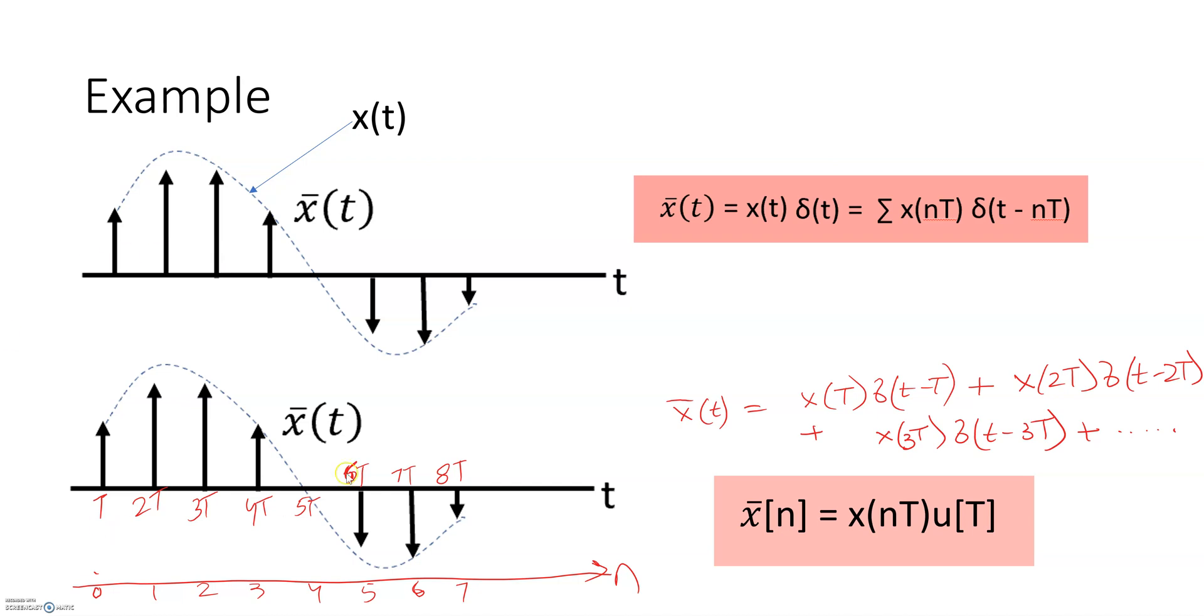I think this is clear from this figure here. So let's say we are talking about the second sample, which is here. So the value of the second sample is going to be equal to the original signal calculated at time 2T. So that's really what this equation is. Let's do an example to understand it further.